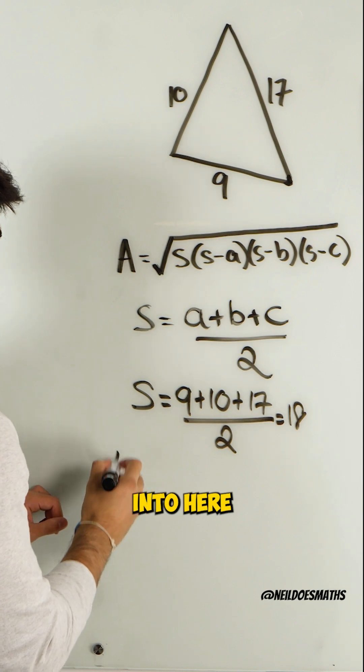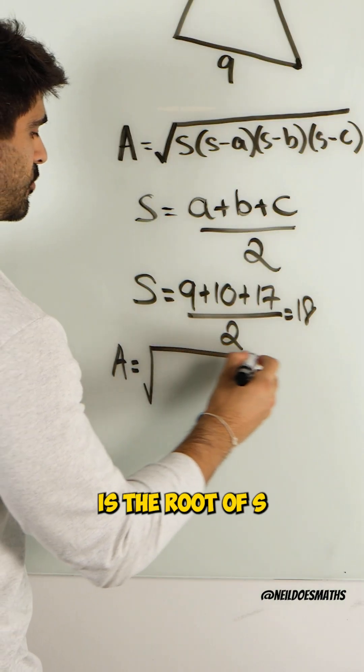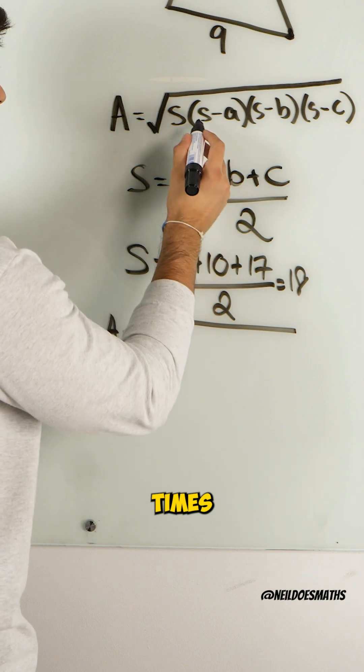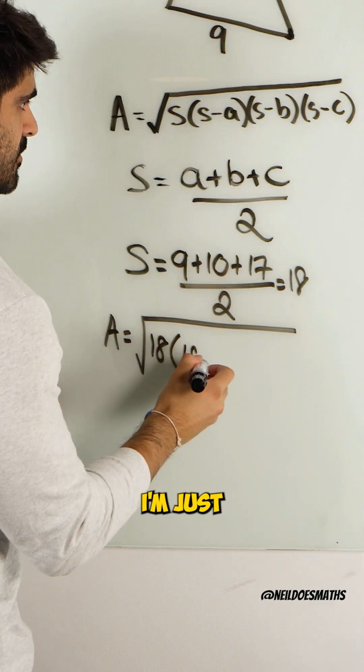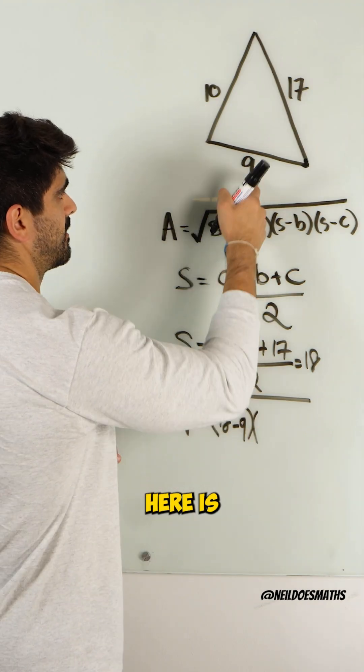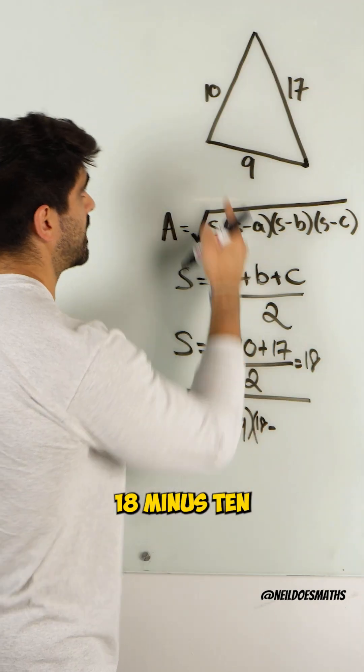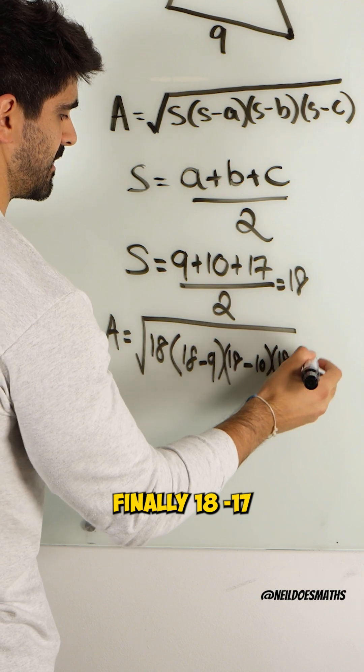And then we're literally just going to sub it into here. So we get the area is the root of S, which is now 18, times 18 minus A. I'm just going to say one of the side lengths here is just 9, 18 minus 10, and then finally 18 minus 17.